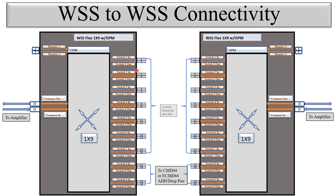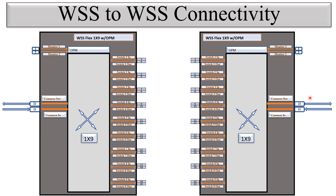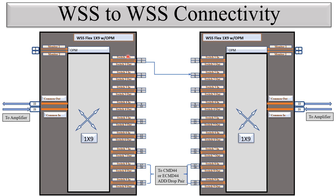You can see this is the WSS-to-WSS switch/demux pair. Any lambda coming from a switch port of one WSS is passed through via physical patching to the switch port of the other WSS, going in the desired direction. For example, switch one out — port number four — is connected to switch two in, port number five. And switch two out, port number six, is connected to switch one in, port number three. Whatever lambdas pass through these switch ports go out via the common output toward the other direction.